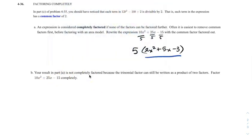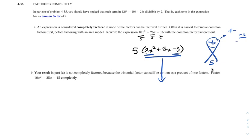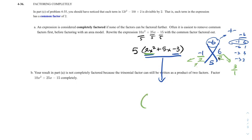So we're going to factor the inner portion 2x squared plus 5x minus 3 using the big X. Apply A times C: 2 times negative 3 is negative 6. Then 5 on the bottom. Since the top is negative, that means different signs. I need two things that multiply to get negative 6 but add to get 5 — that is negative 1 and 6. Then divide by A, which is 2. Negative 1 over 2 can't reduce, but 6 over 2 gives 3 over 1. So we get 2x minus 1 and 1x plus 3. And don't forget the 5 we factored out earlier — that's also part of the answer.